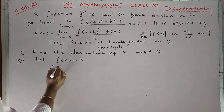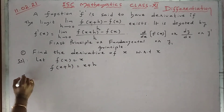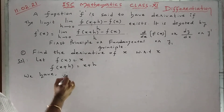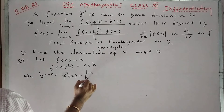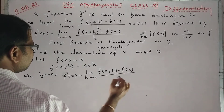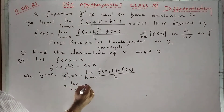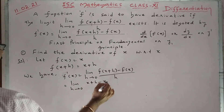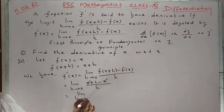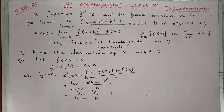Now f(x+h) means in the place of x we write x+h. Our formula is f'(x) = limit h tending to 0 of f(x+h) minus f(x) upon h. Substituting values: limit h→0 of (x+h) minus x upon h. The x's cancel, giving limit h→0 of h/h, and h/h also cancels.